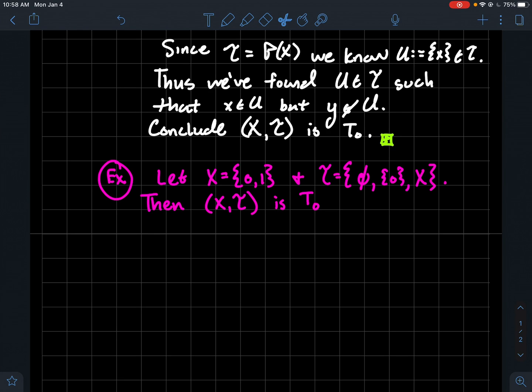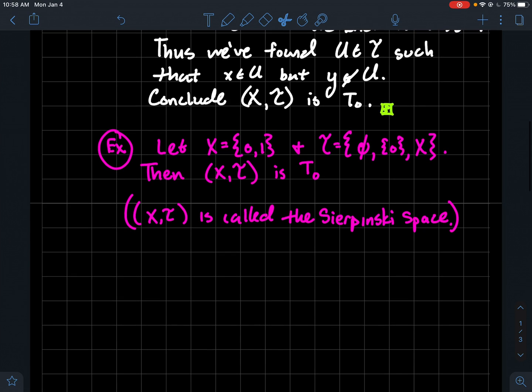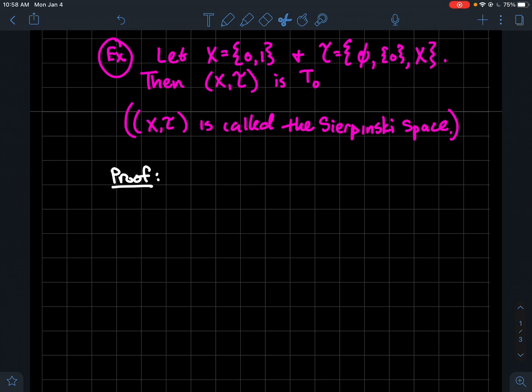So in this case, (X,τ) is a T₀ space as well. And so sometimes this set and this topology is also kind of famous. It's called the Sierpinski space. You can take a look at why it's famous sometime later. But let's talk about just how do we show that it's T₀.